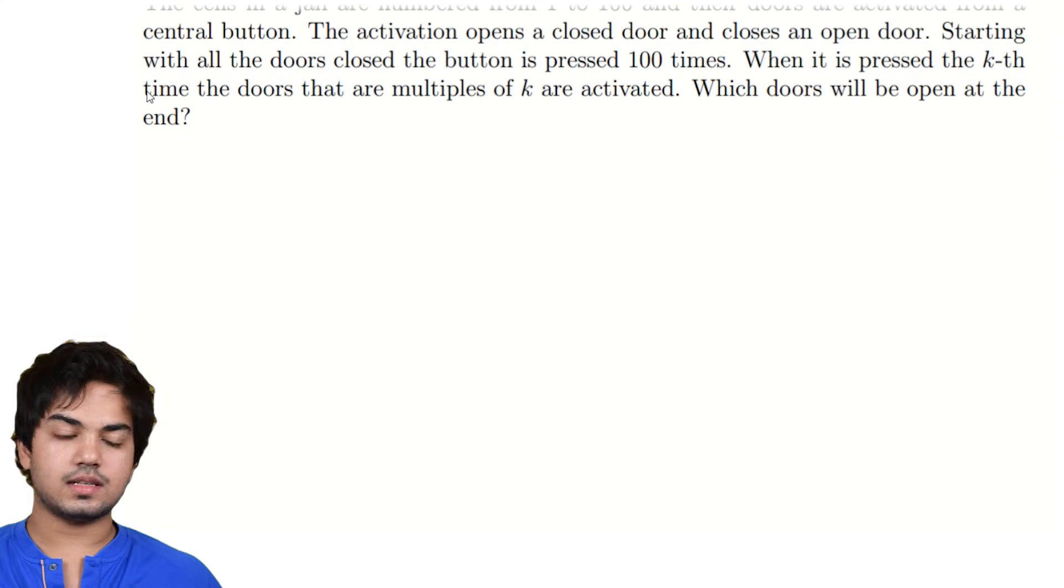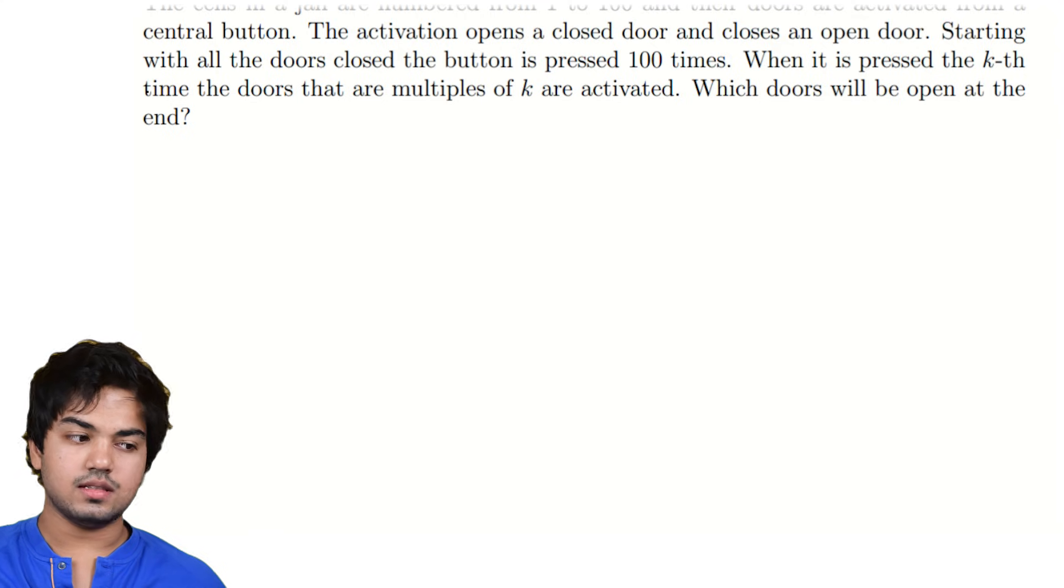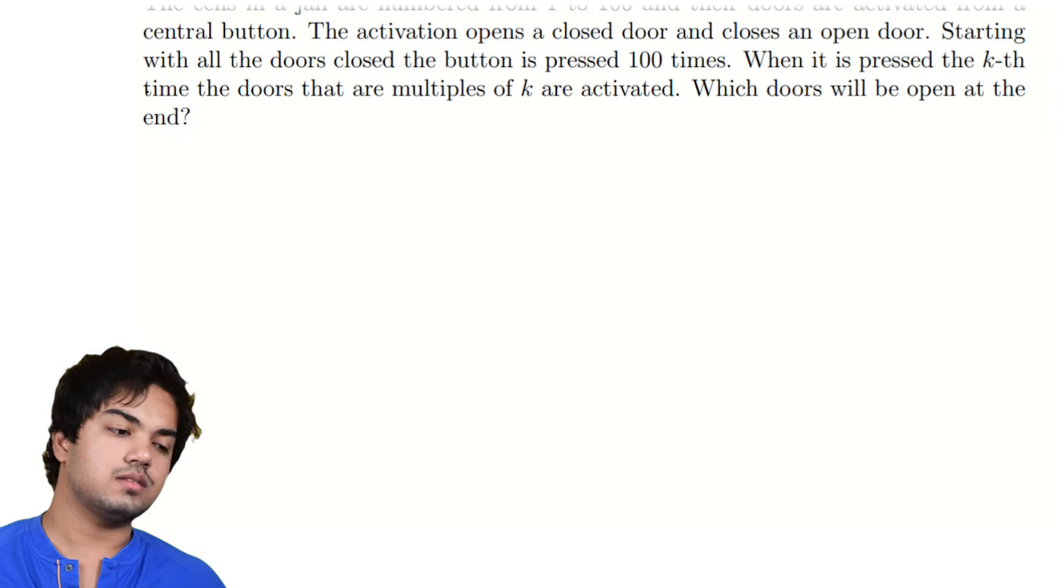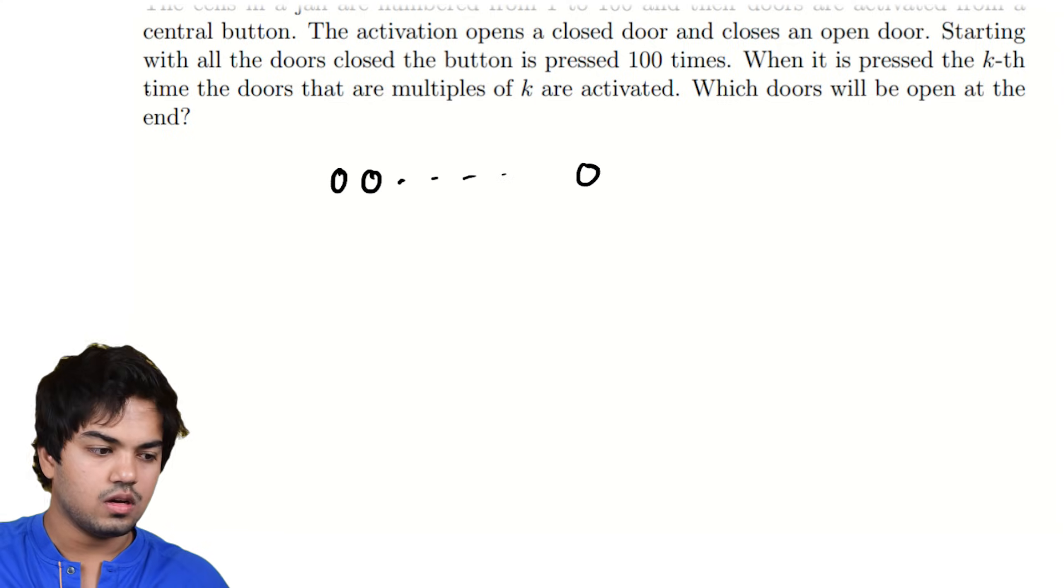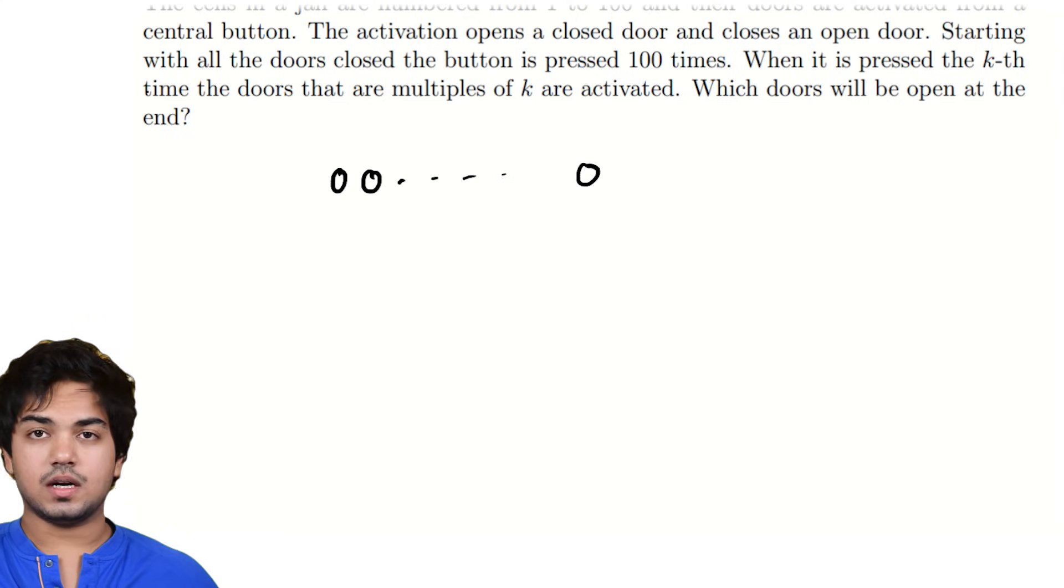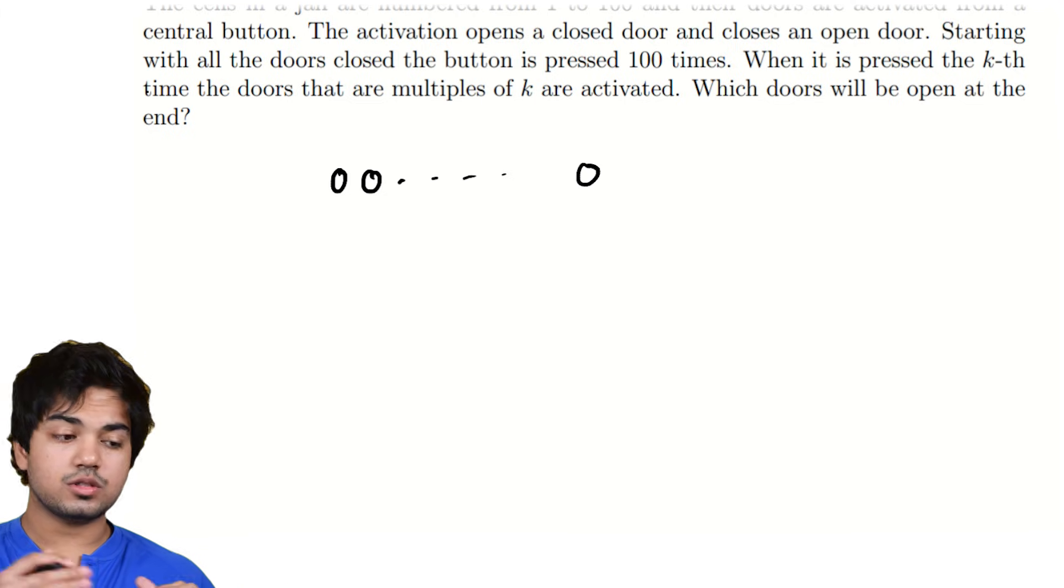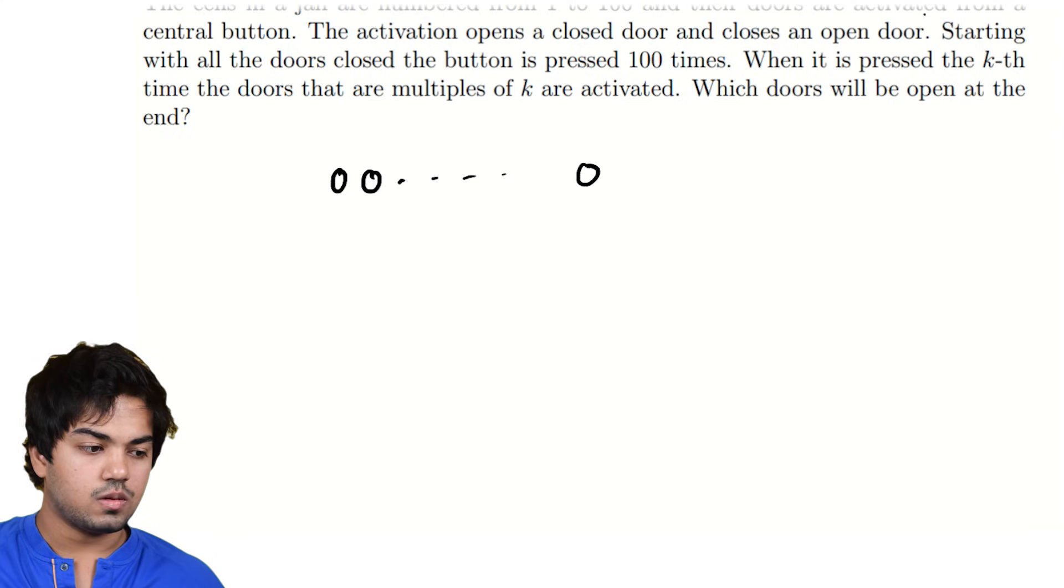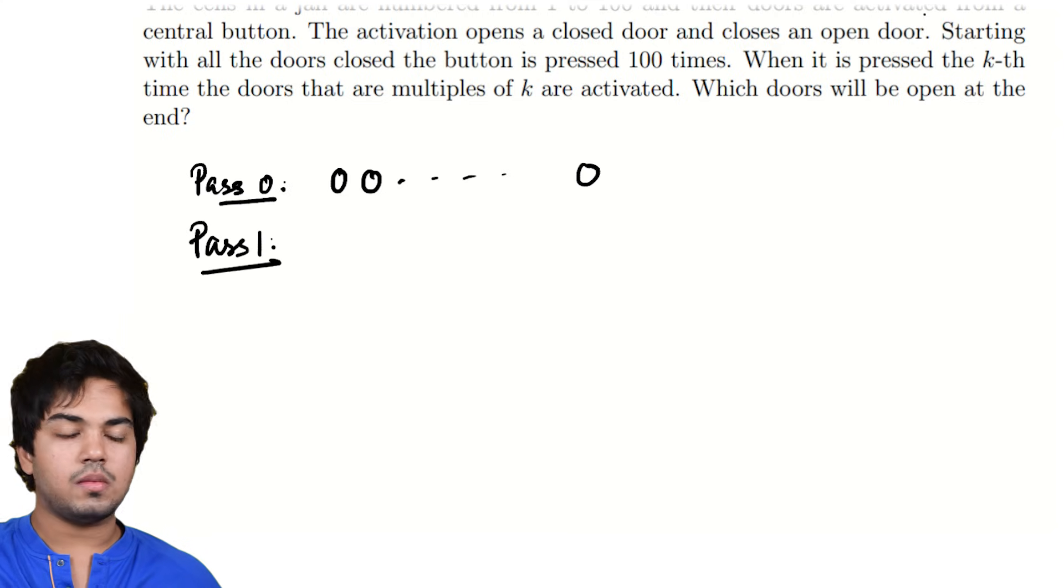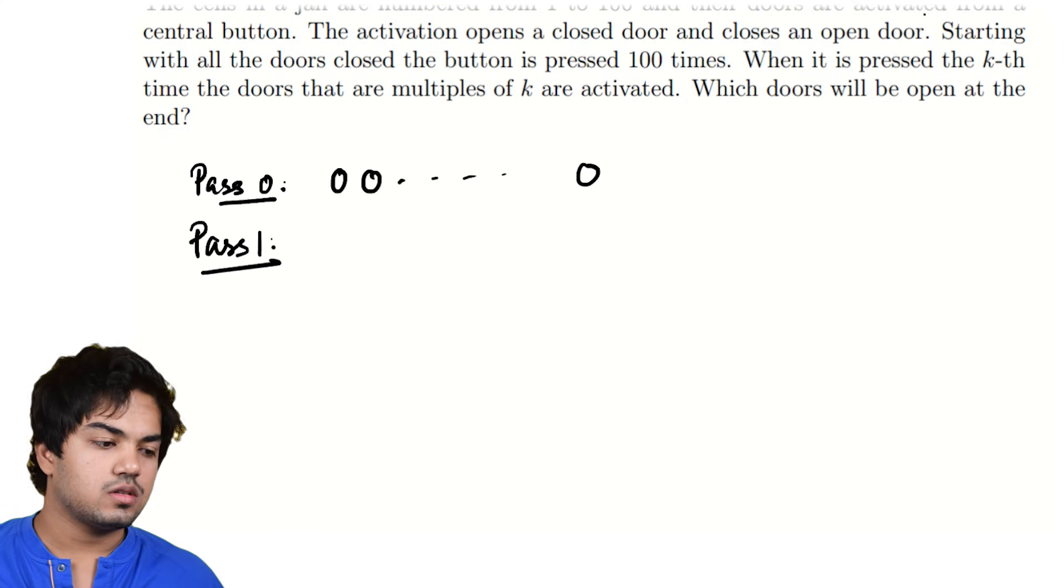So if you think of it as passes, you have this set of numbers essentially. You have 100 numbers and initially they're all closed. As you do with these kinds of problems, you write the state of the system as a set of 100 numbers, all zero to begin with, representing the fact that they're all closed. In each pass, you flip certain numbers. You make a zero a one or make a one a zero. Which positions will you do that at? That's what the question says. When it is pressed the kth time, the multiples of k will flip. So pass one, this is pass zero, the initial state.